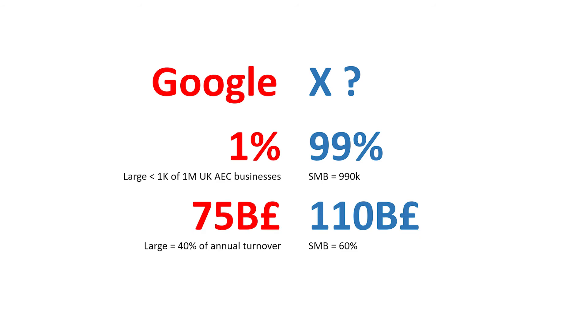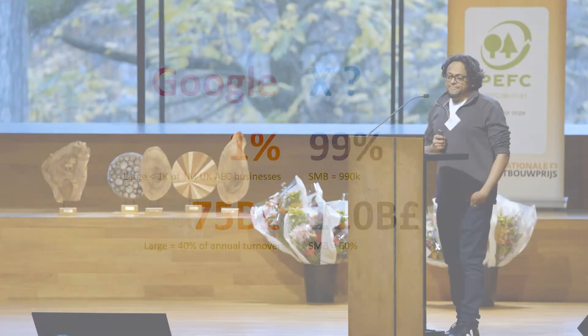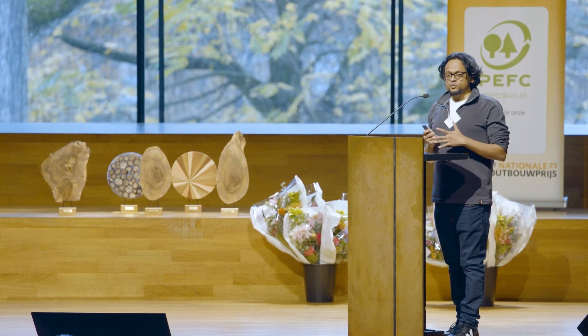We can see why Google wants to do this — the construction industry is very lumpy. 1% of UK companies in the AEC industry, out of one million companies, are responsible for £75 billion of turnover. So if you can disrupt that 1%, there's a lot of business case there. But on the other hand, there's 99% which are small and medium businesses, still responsible for a significant amount of revenue. What Google is trying is not going to work for the other 99%, and that's where we are trying to come in — what can we do on the other side, which represents a significant portion of the building industry.